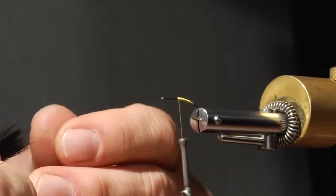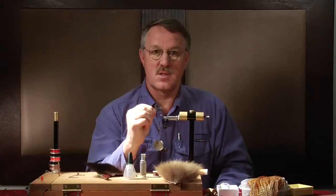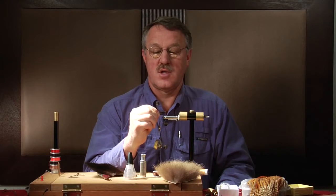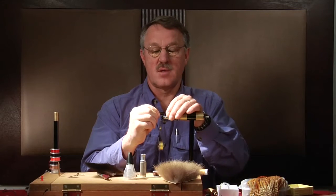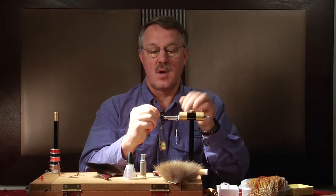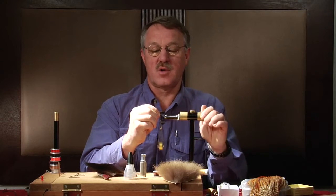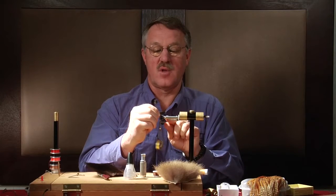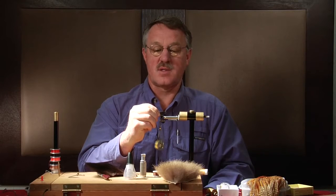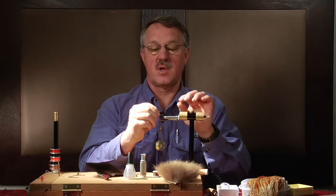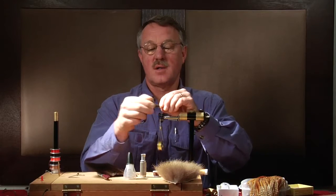So I'm going to gauge the length of this, just about a width of the gap here from the top of the hook to the shank, past the bend of the hook. And that's how far my tail is going to be. So I'm going to cut this off before I tie it on.